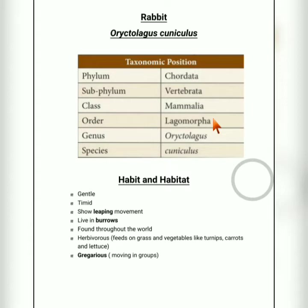Regarding parental care, hares do not need as much parental care, whereas rabbit babies do not have any fur and are blind when they are born. They are helpless, so they need a lot of parental care. These are the differences between hares and rabbits.